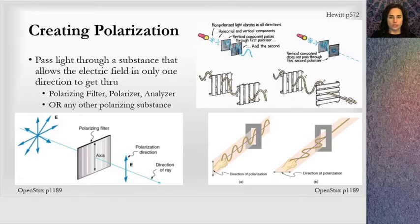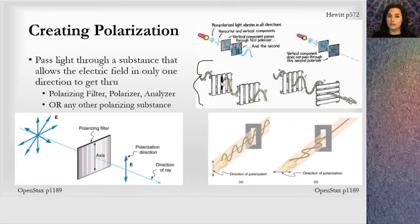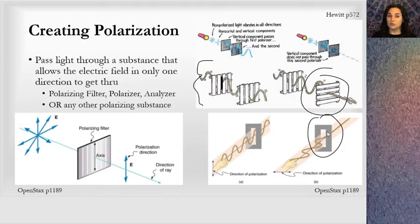So how do we create polarization? The answer is to pass light through a substance that allows the electric field in only one direction to get through. I like this fence picture — the model is to shake a rope up and down, letting that represent the direction of the electric field oscillation. If we set up a fence, only the rope that oscillates along the direction of those open slots is going to get through. If it oscillates in the other direction, the wave does not get through. That's how we create polarized light: we orient some sort of linearly slotted substance with the light waves.